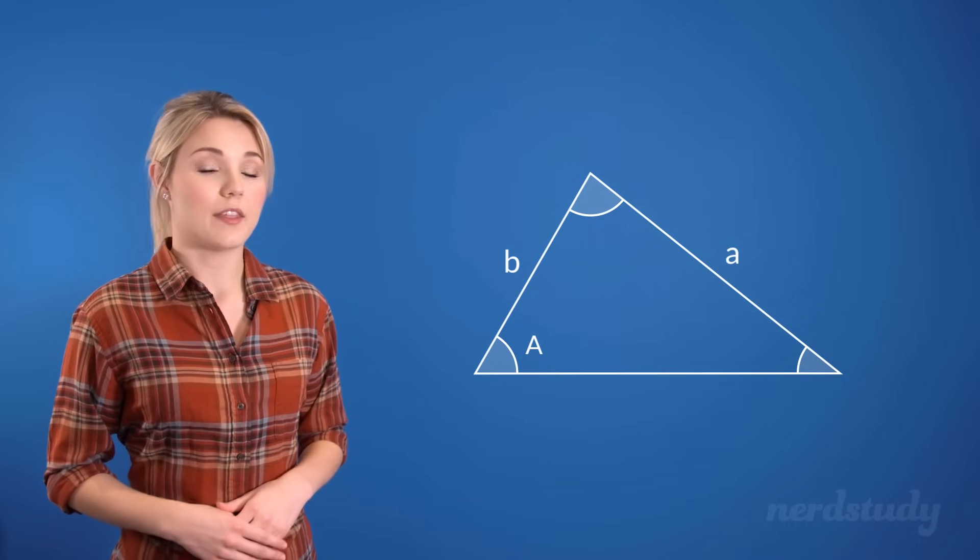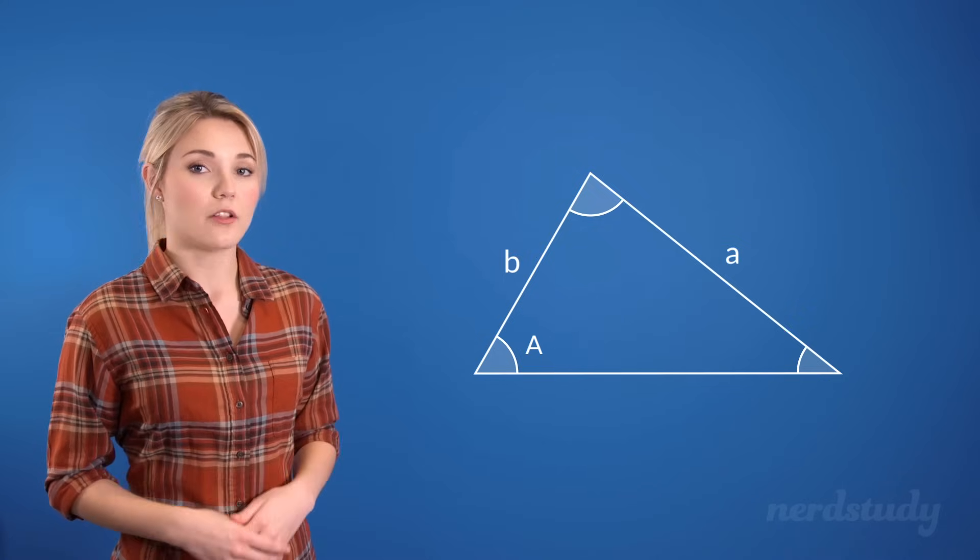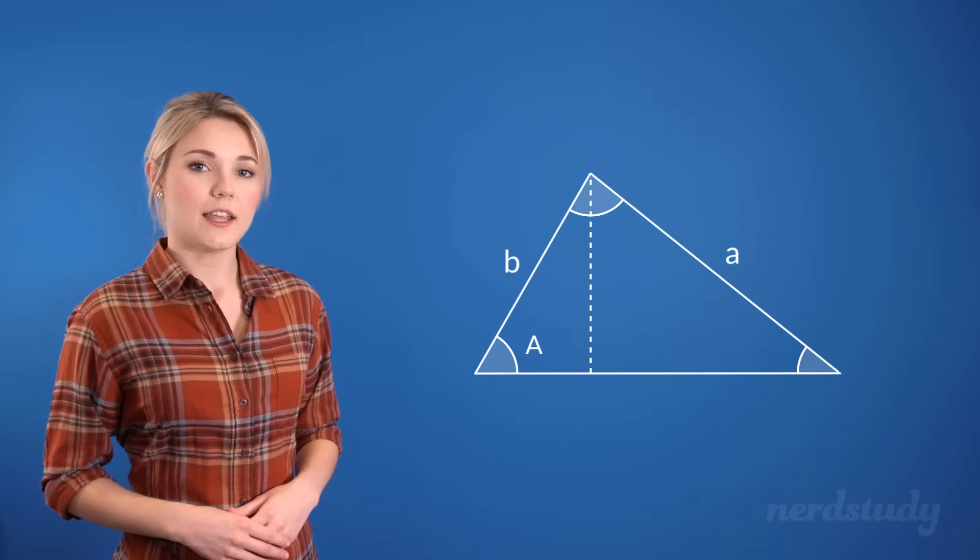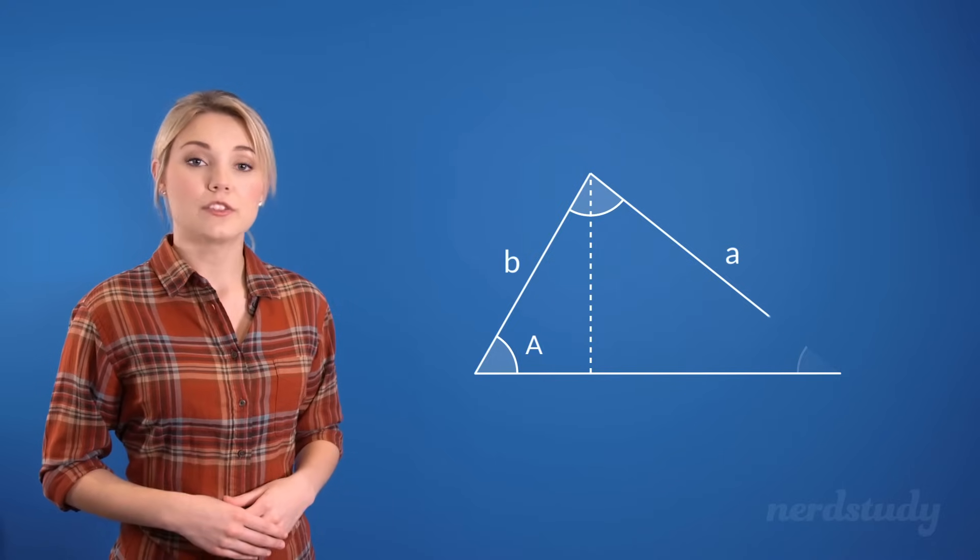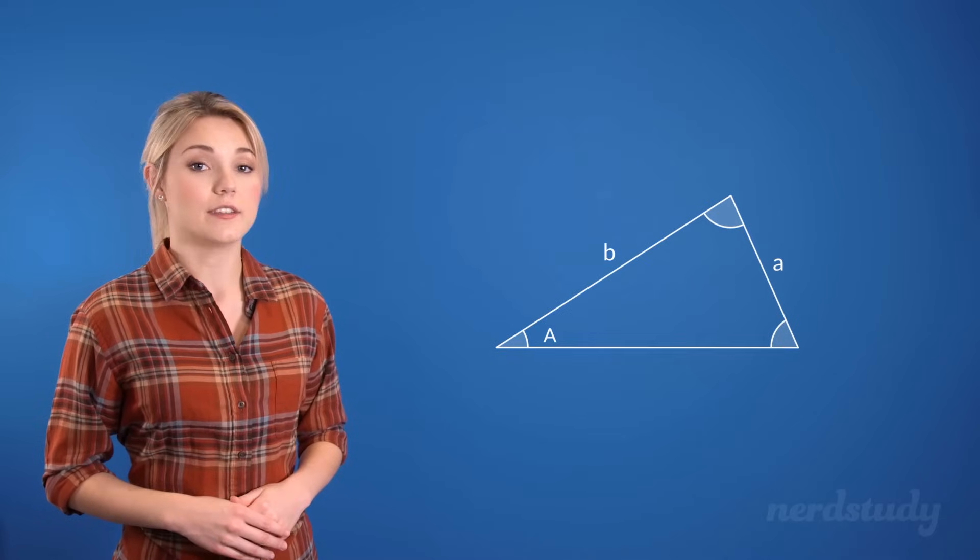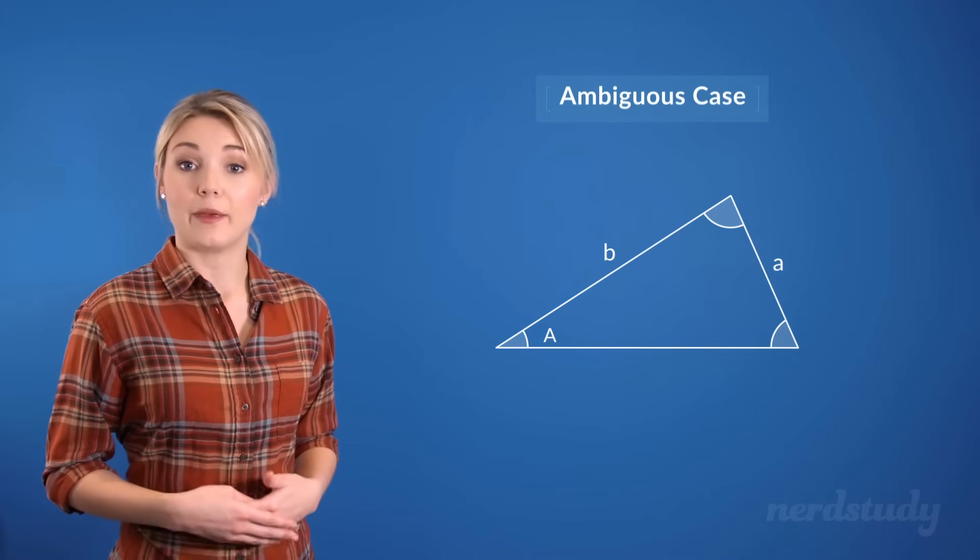First of all, we've already learned that the a, which is generally the side opposite to the angle, must be longer than the height of the triangle. If it's not, then we wouldn't even have a complete triangle altogether. But assuming that it is longer than the height, but shorter than the length of the side right beside the angle, we'd have ourselves what we'd call an ambiguous case.